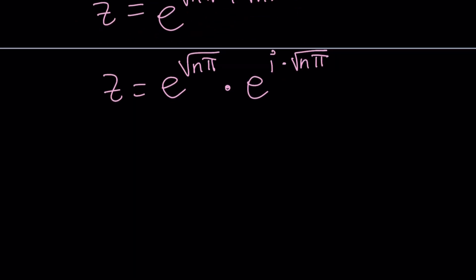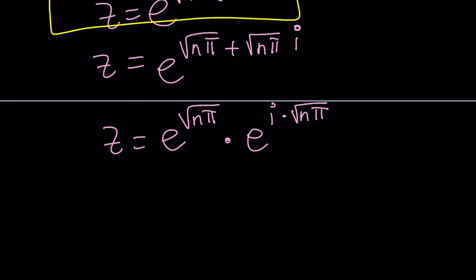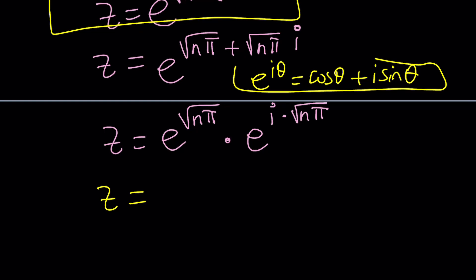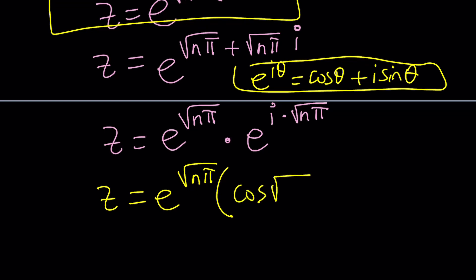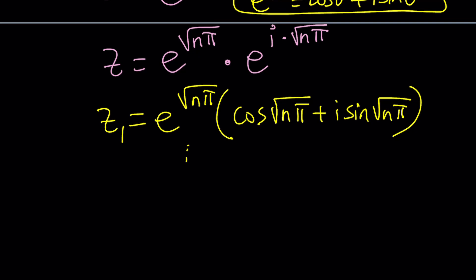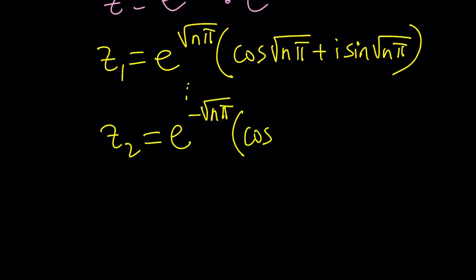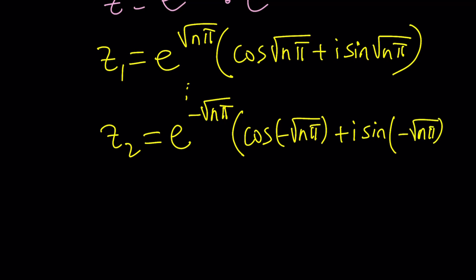Remember, e to the iθ is cos θ + i sin θ. Using that idea, we can write this as e to the power √(nπ) — which is the modulus — times (cos(√(nπ)) + i·sin(√(nπ))). That would be z₁. And by doing the same type of work, you're going to get the other solution as e to the power negative √(nπ), because when you square root you get two values plus or minus. And then inside you're going to have negative √(nπ) as the argument. So that is another solution. Obviously these are not all the solutions, just a sample of what the problem looks like.